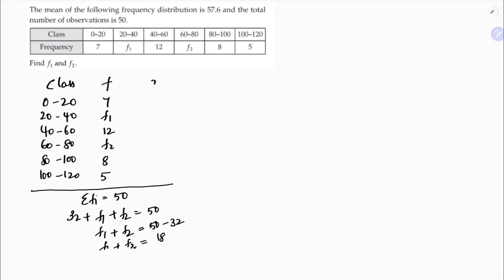To calculate the mean, we first need to find the class marks, which are compulsory for this method. Here h = 20, which is the class size, calculated as 100 - 80 or 120 - 100.